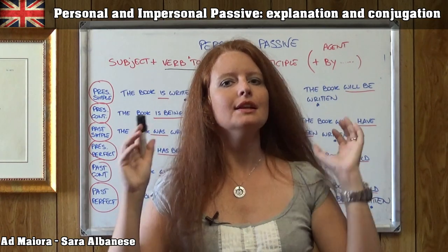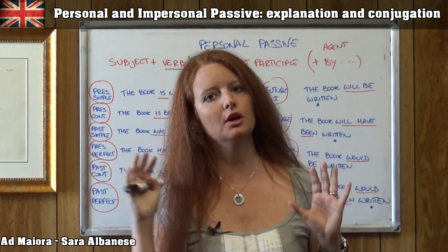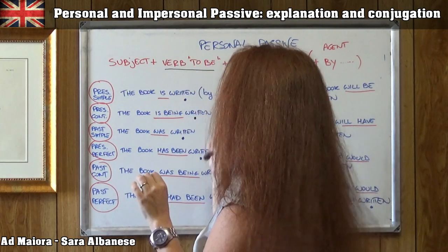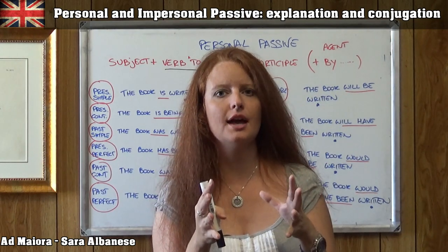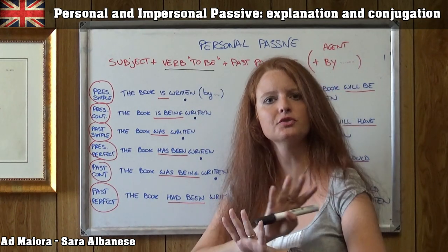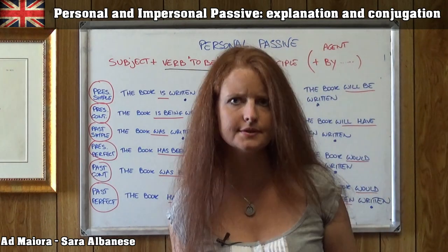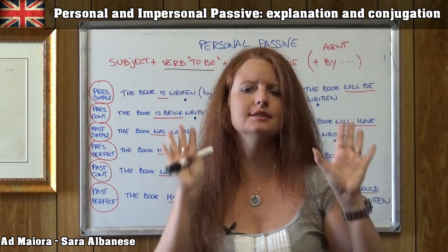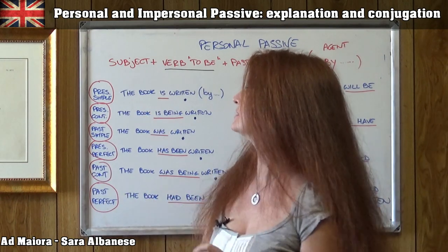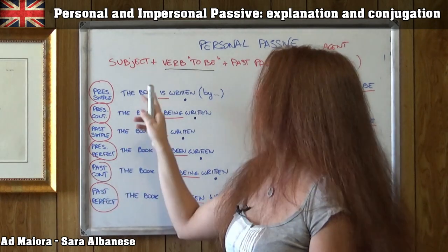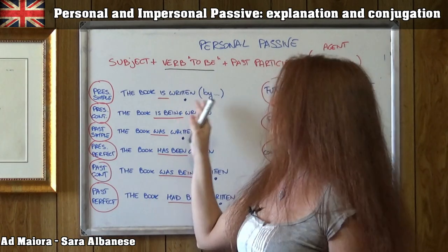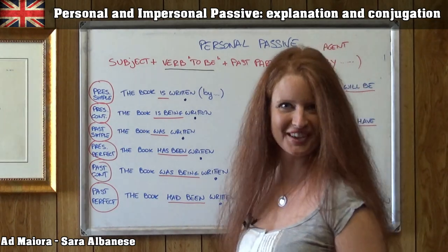Let's try and see the passive form in all possible English tenses. Pay attention — the only change I'm going to make here is conjugating the verb 'to be' in different tenses. The rest of the sentence is always the same; the past participle is always the same, it can't be conjugated, it never changes. Let's start with the easiest one: the present simple — 'the book is written.' 'Is' is my verb 'to be' conjugated in the present simple. If I want I can add 'by Shakespeare' or whoever.